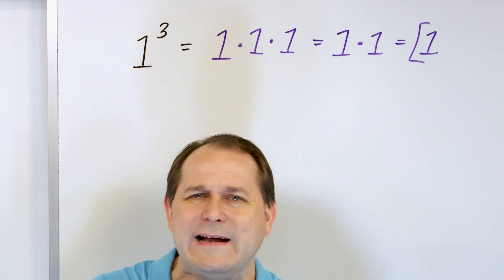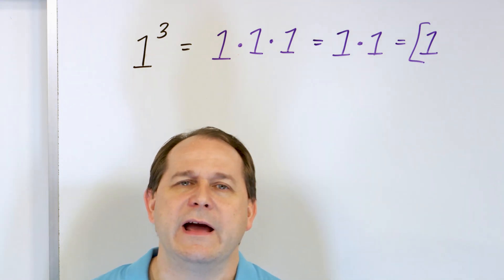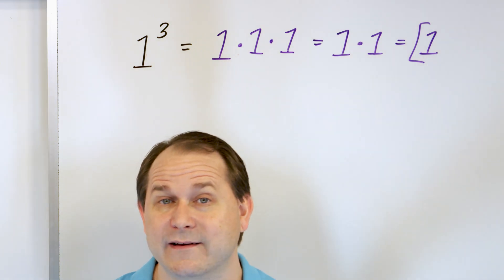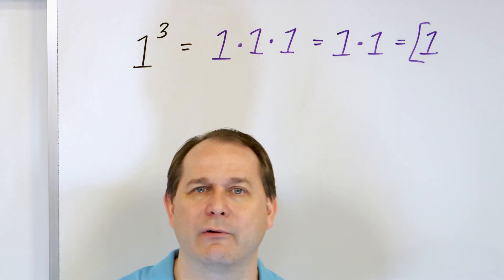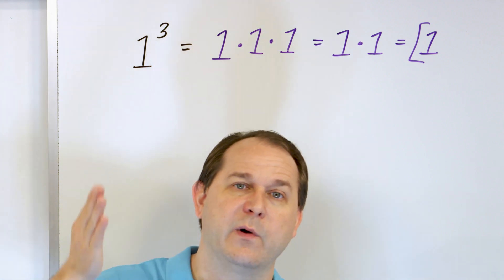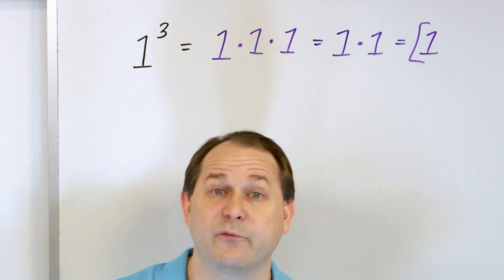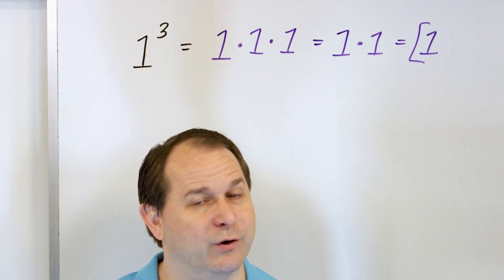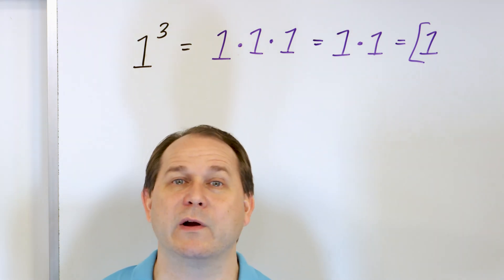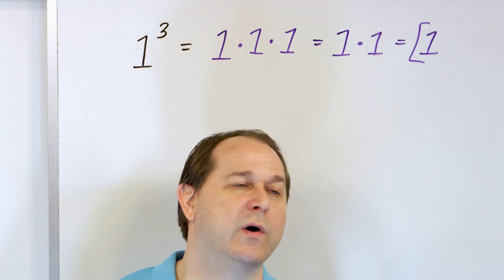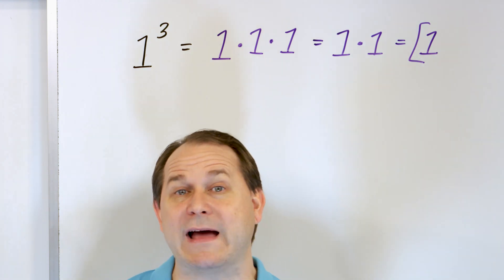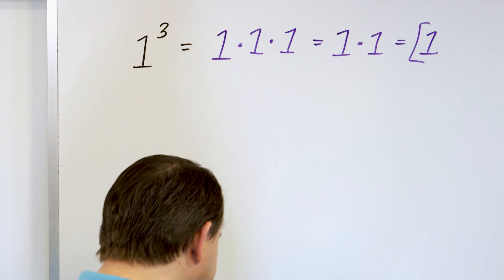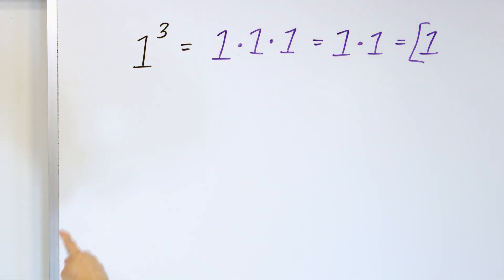I'll tell you right now: 1 is a special number. It doesn't matter what exponent you raise it to, the answer is always 1. 1 to the power of 4 is 1 times 1 times 1 times 1, which equals 1. What is 1 to the power of 19? Still 1. What is 1 to the power of 100? Still 1. What is 1 to the power of 2,034? Still 1, because all you're doing is multiplying by 1 over and over again.